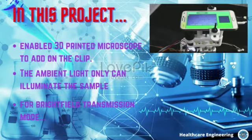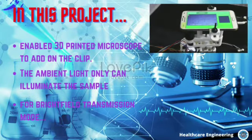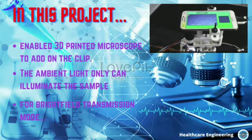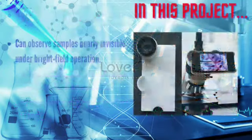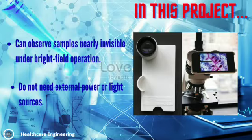For bright-field transmission mode, our design takes advantage of the integrated phone flash together with diffuse reflection. The 3D-printed device itself has the necessary geometry to create diffuse transmission illumination without employing an external diffusely reflective object behind the sample. Moreover, dark-field imaging is made possible by designing the clip so that ambient light only can illuminate the sample via internal reflection within the sample glass. As a result, we can observe samples that are nearly invisible under bright-field operation due to low absorption or refractive index contrasts, such as cells in media, because this design requires no external power or light sources.